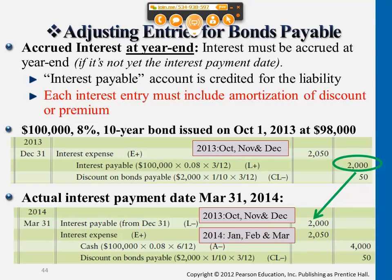Any questions? Now, if I change this problem so the issuance date is November 1st, what part would change? How would we calculate the dollar amount for interest payable or discounts? For the first entry, it will still be face value $100,000 and still be interest rate 8%, but only for two months — because we only have November and December. So we're doing two months of interest accumulation.